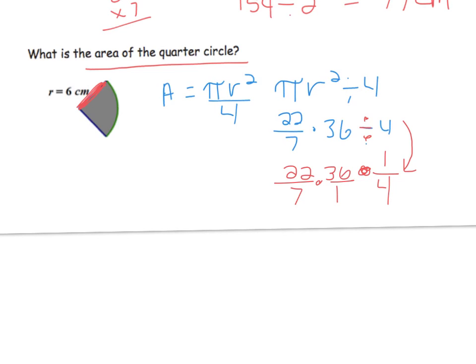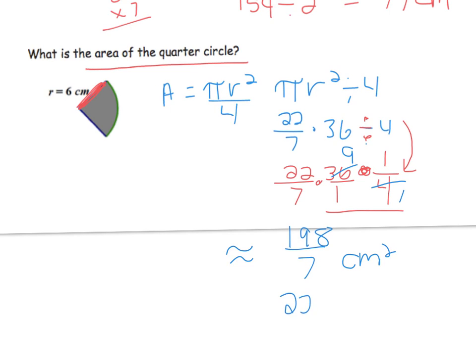So now I can do: 4 goes into 4 once, and goes into 36 nine times. Then I do 22 times 9 to get 198, divided by 7, to get approximately 28.89. So it's approximately 198/7 centimeters squared, which is approximately 28.29 centimeters squared. Remember, the reason we spend time on the multiplicative inverse is because it really does make your life easier in the end.